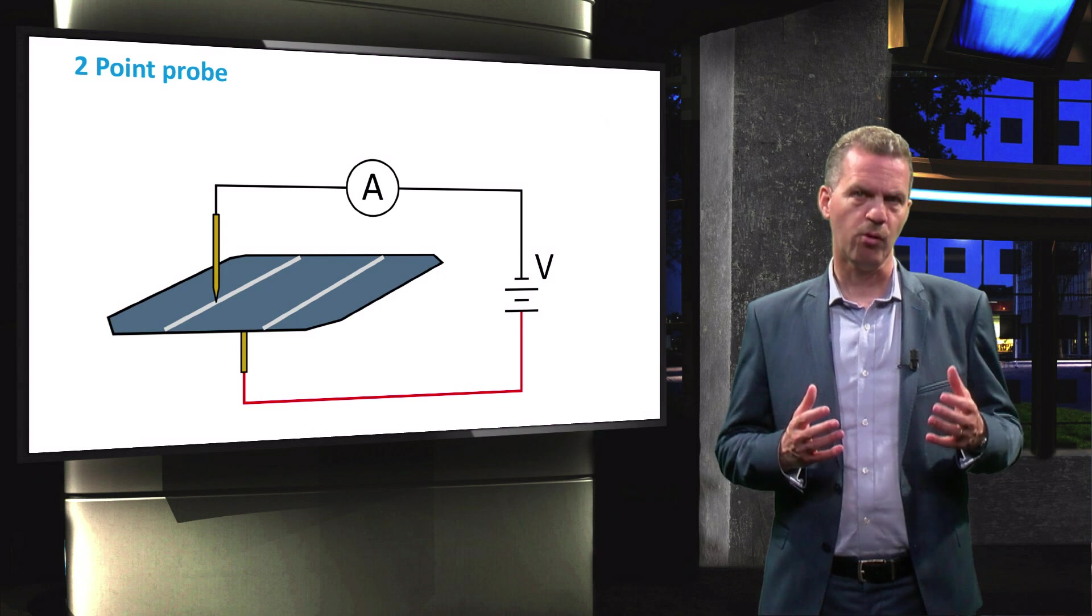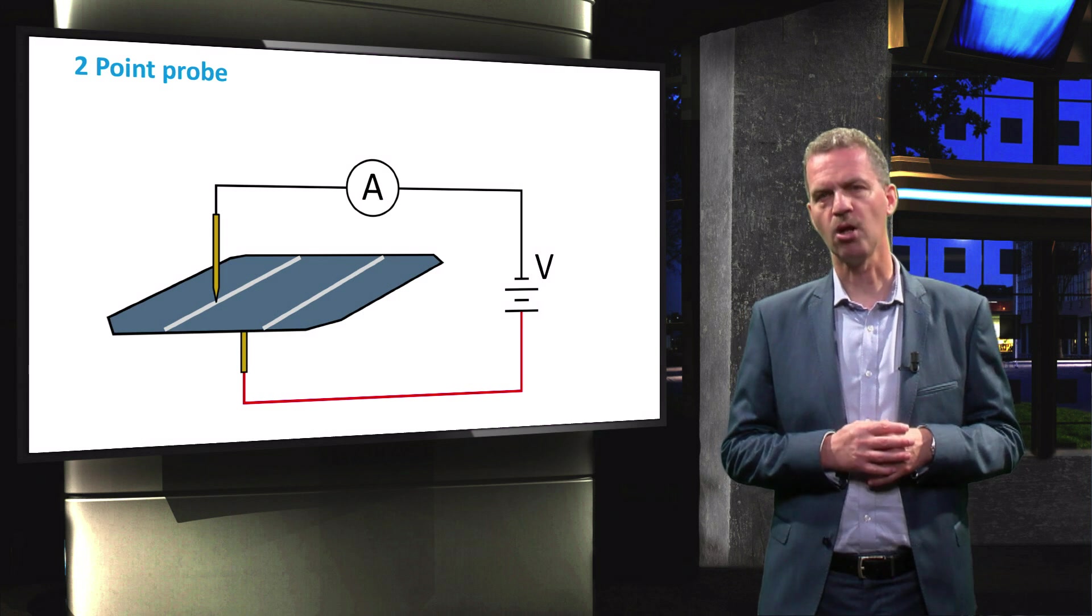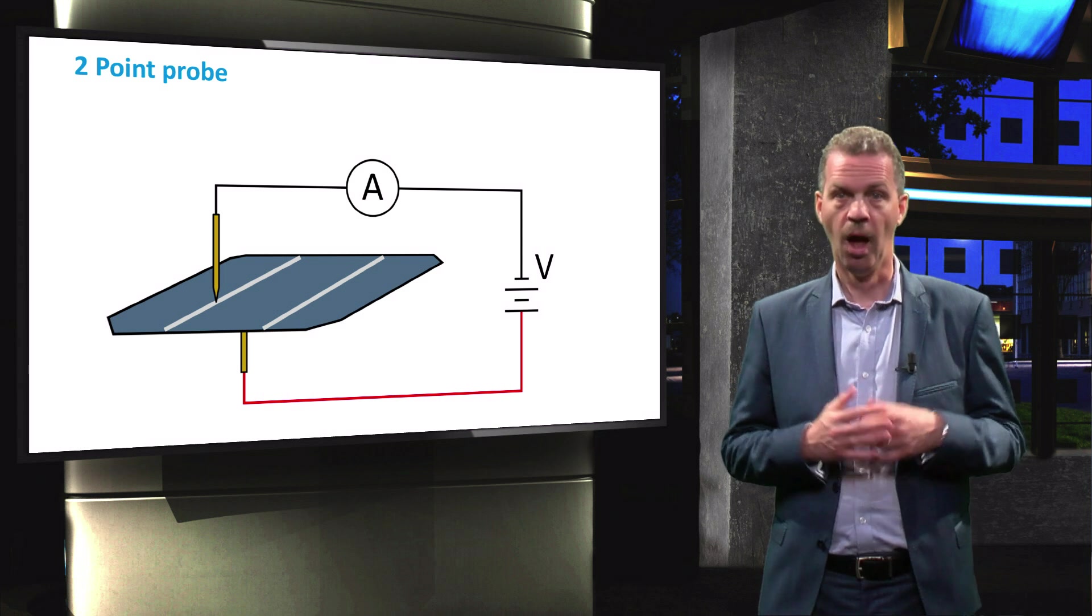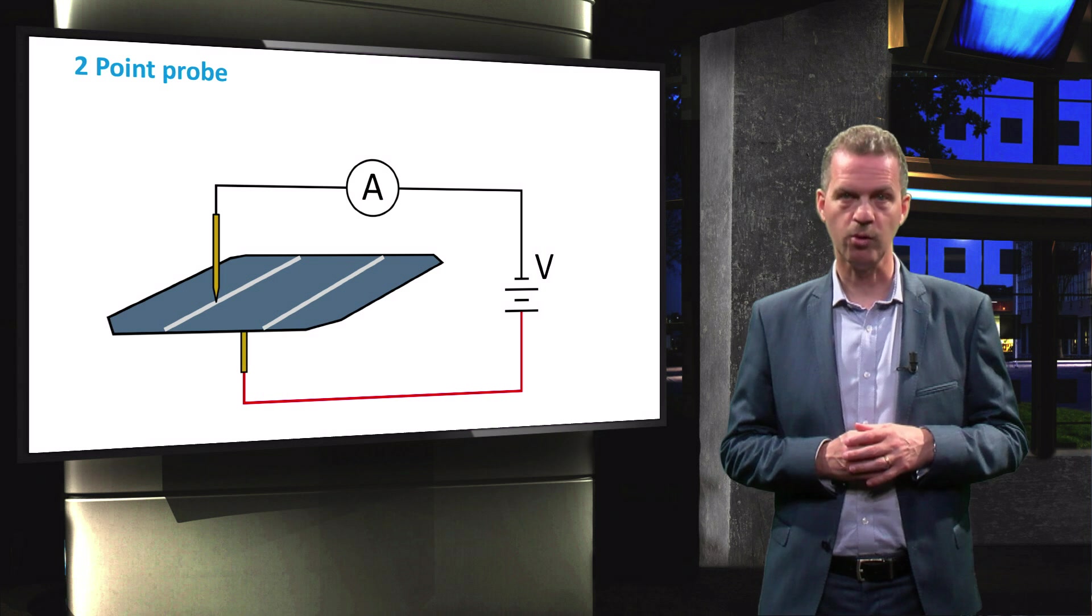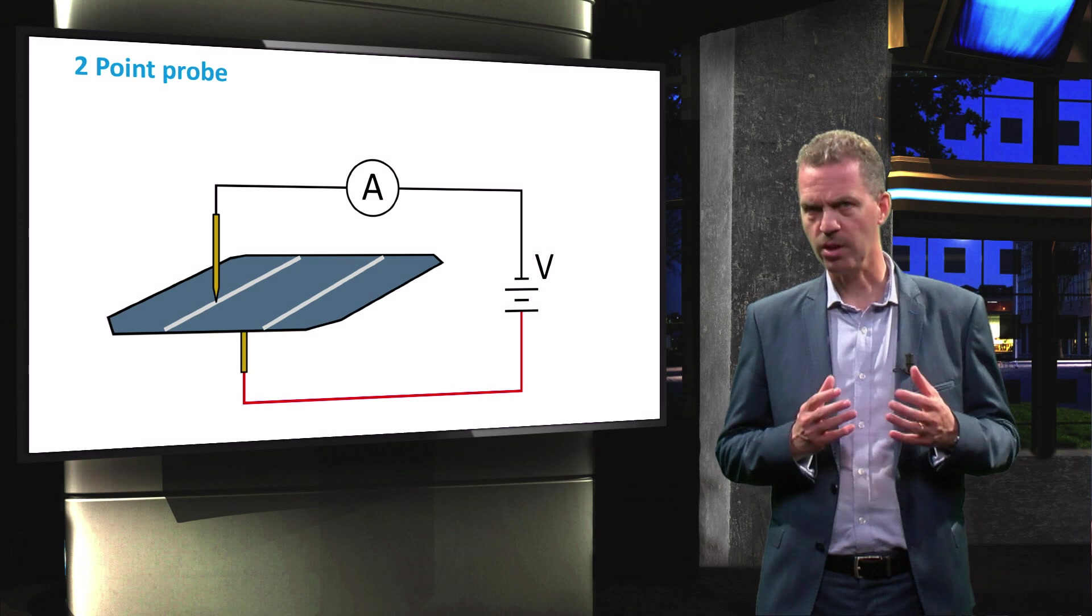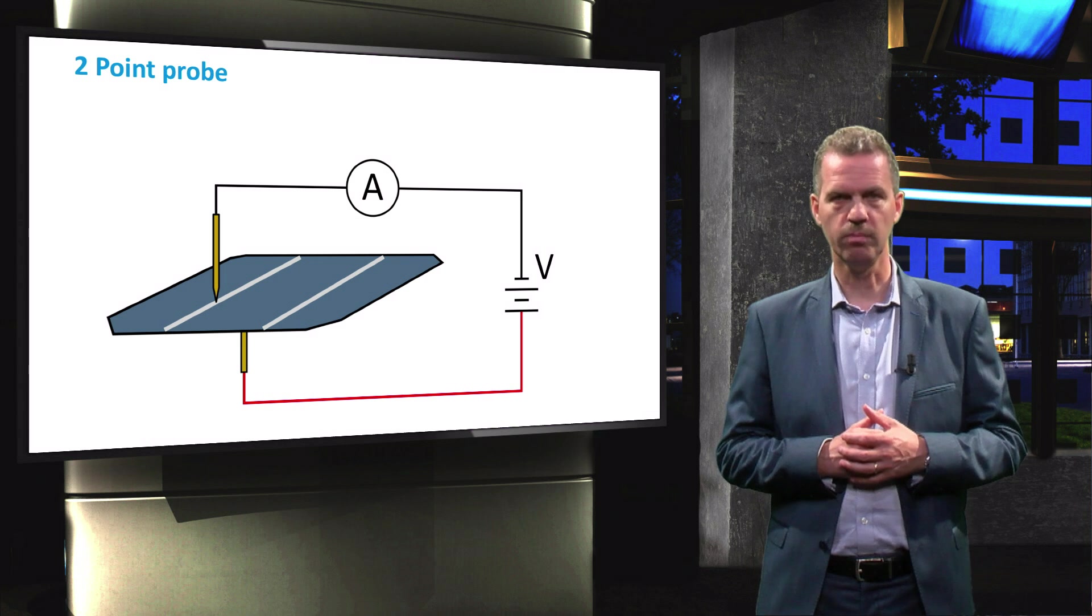In a simple 2-point probe measurement, the voltage and current will be sent through the same wires at the same time. This implies that the inevitable contact resistance and voltage drop across the wires is not accounted for and the measurement will be inaccurate.